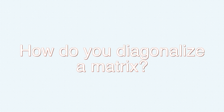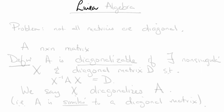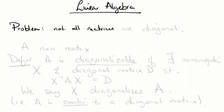Hi class. Let's talk linear algebra. Last class we were talking about how awesome diagonal matrices are. The problem that we have, of course, is that not all matrices are diagonal matrices. The good news is that sometimes we can make a matrix diagonal using eigenvalues.